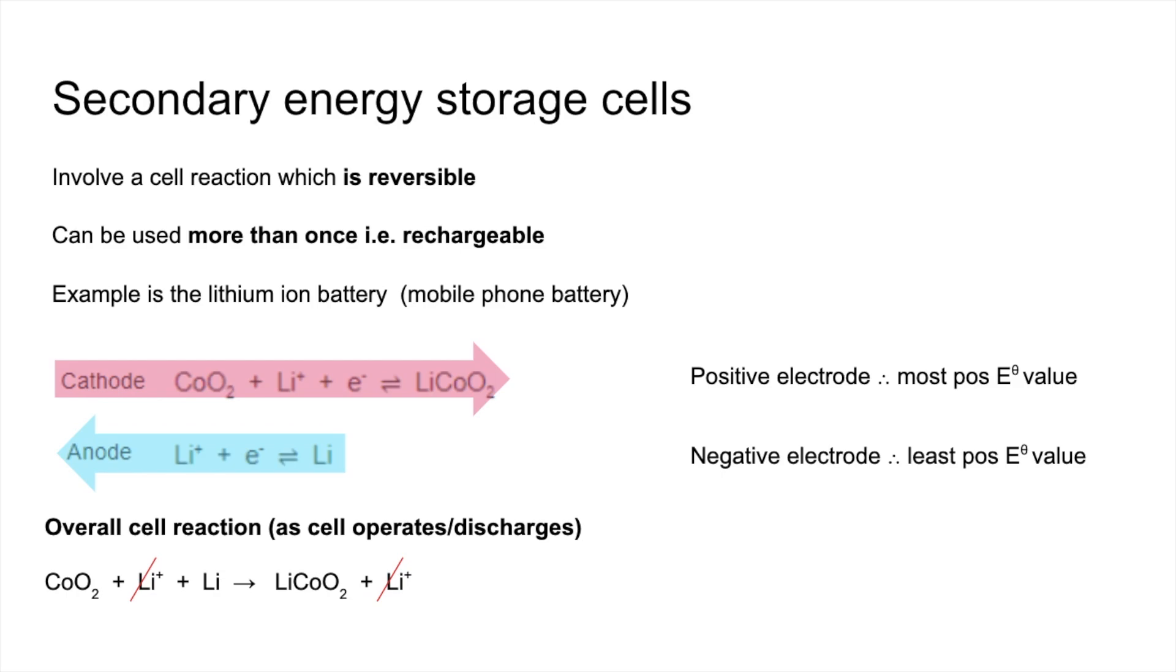So obviously when your phone battery's gone flat, it means that the reactants have been used up, but we can plug it into an external power supply. So when you plug your charger into your phone, you're basically forcing the cell reaction in reverse, and so the reaction would just be the other way around. And so it would be LiCoO2 going to CoO2 plus lithium.